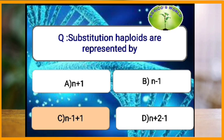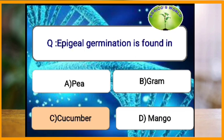Substitution haploids are represented by which formula? A substitution haploid is a haploid which develops from a substitution line and is represented by n minus one plus one. Epigeal germination is found in which crops? Cucurbits, castor, and onion show epigeal germination, whereas gram, pea, mango, and maize show hypogeal germination. The answer is cucumber.